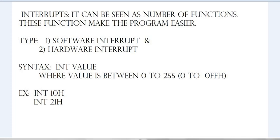In this video we will discuss interrupts. You can understand an interrupt basically as a function — like in C programming or Java programming we write different functions to make our work easier. Similarly, we have interrupts in 8086 assembly language, and all the interrupts are stored in the interrupt vector table. There are two types of interrupts: software interrupt and hardware interrupt, but in our programming we deal with software interrupts. The syntax is: INT <value>, where the value ranges from 0 to 255, giving us a total of 256 interrupts.